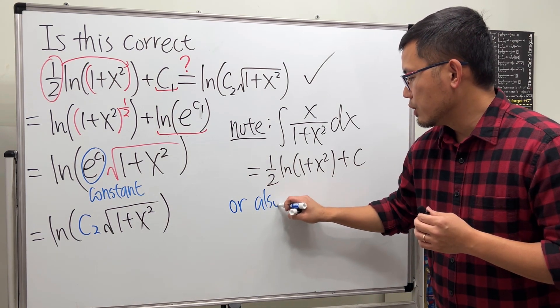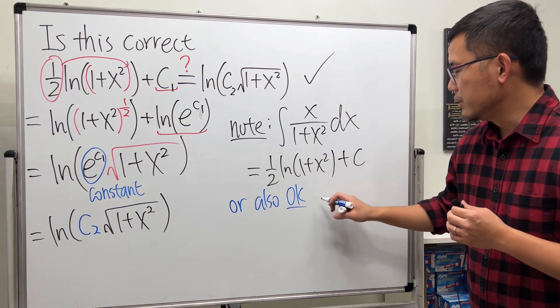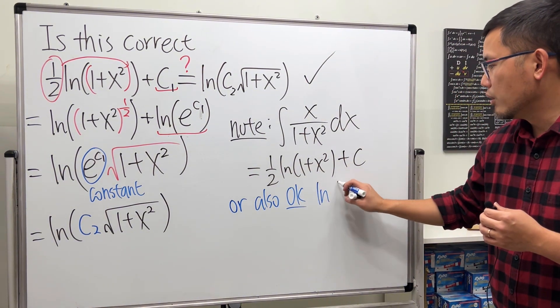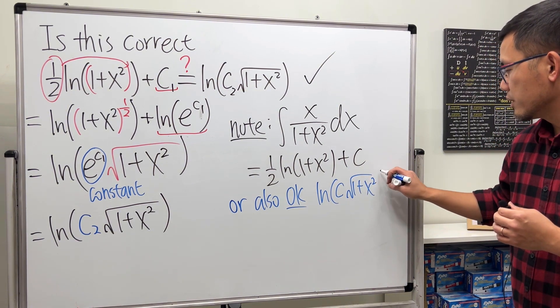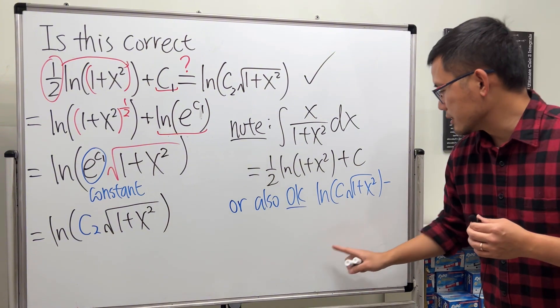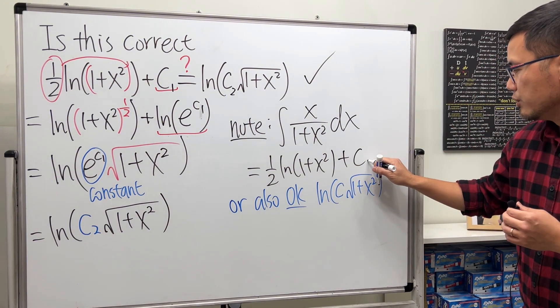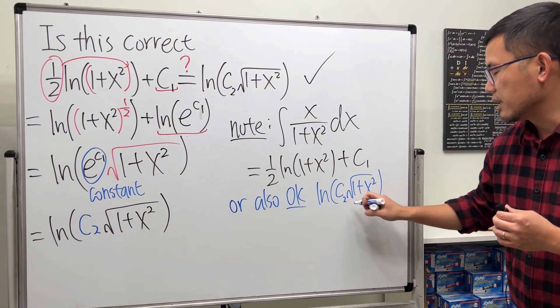Or you can also say, also okay to put it as ln of c square root of one plus x squared, and then there's no more plus c because the c is inside. But the key is you have to know this is technically c1 and not c2.